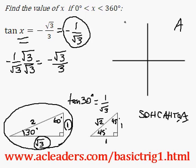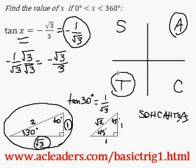All students take calculus. We know that in quadrants 2 and 4, tangent will be negative, because tangent is only positive in the first quadrant, where all ratios are positive, and on the third quadrant, where only tangent is positive.